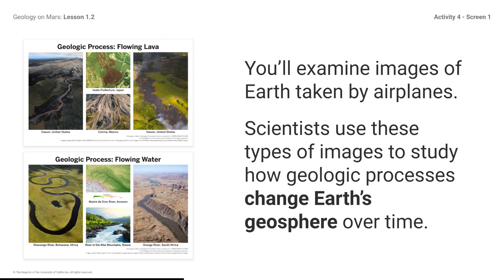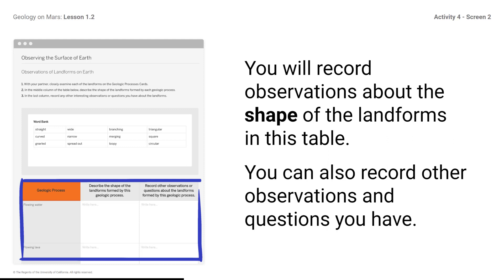You will examine images of Earth taken by airplanes. Scientists use these types of images to study how geologic processes change Earth's geosphere over time. You will record observations about the shape of the landforms in this table. You can also record other observations and questions you have. You can use the word bank as you make observations.